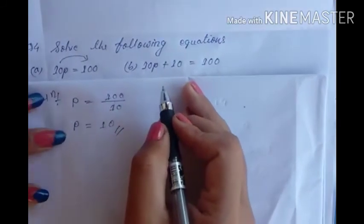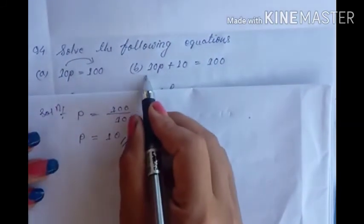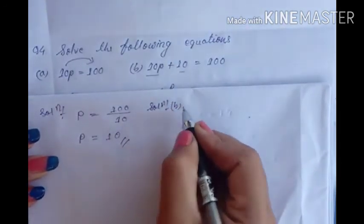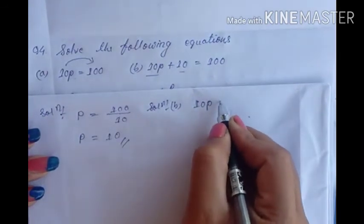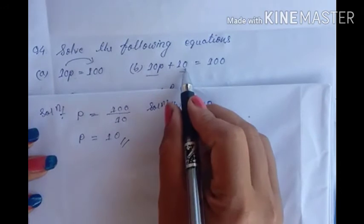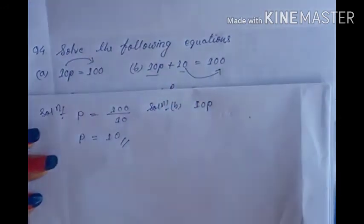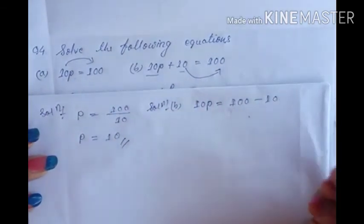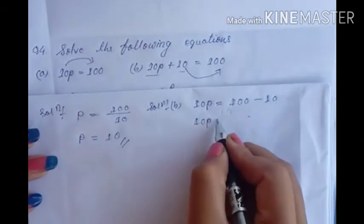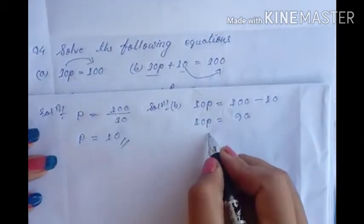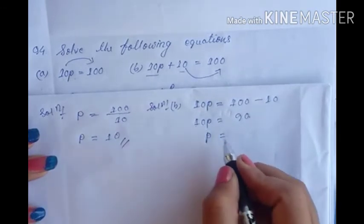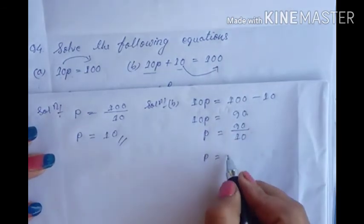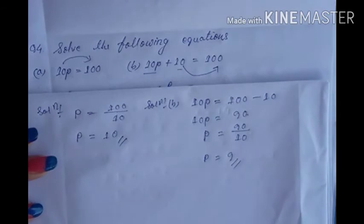For B: 10p plus 10 equals 100. Transpose the constant to the right hand side — plus 10 becomes minus 10. So 10p equals 100 minus 10 equals 90. Transpose 10 — multiply becomes divide. So p equals 90 divided by 10, which gives p equals 9.